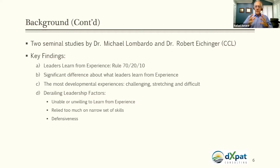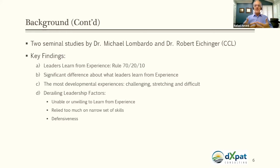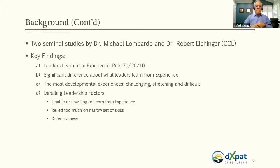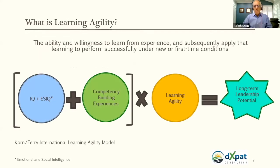In the year 2000, Lombardo and Eichinger identified critical derailing factors for leaders. One of the most important was that leaders who were considered successful and high performers could also derail if they became unable or unwilling to learn from experience, if they relied too much on what they learned in the past and applied it to new or first-time conditions, and very importantly, if they became defensive — a concept I'll address in about two or three slides.